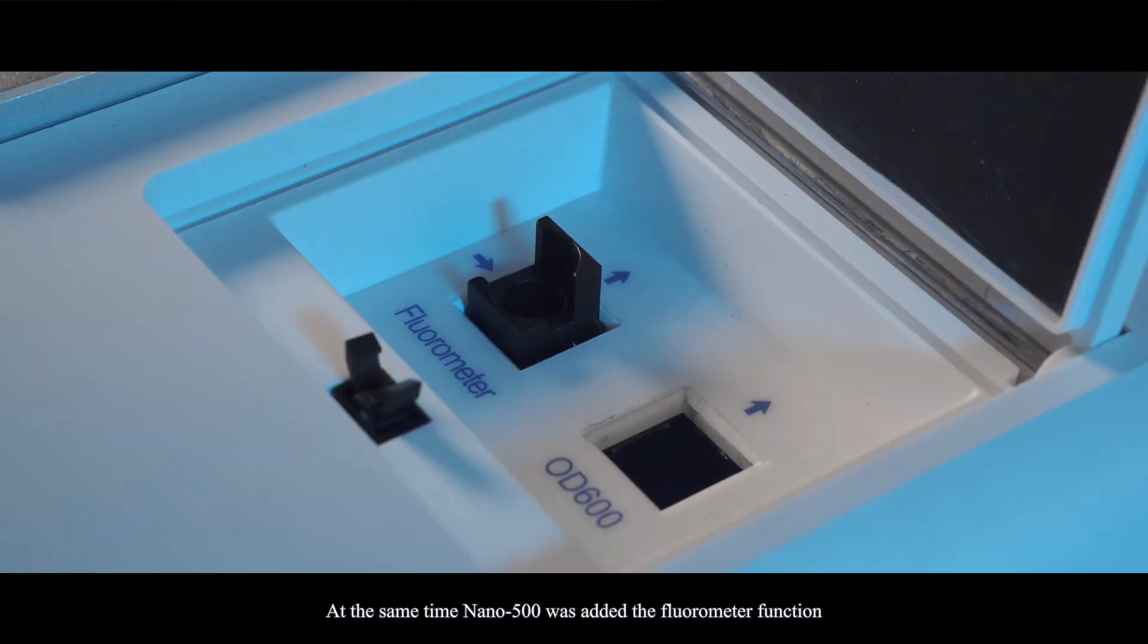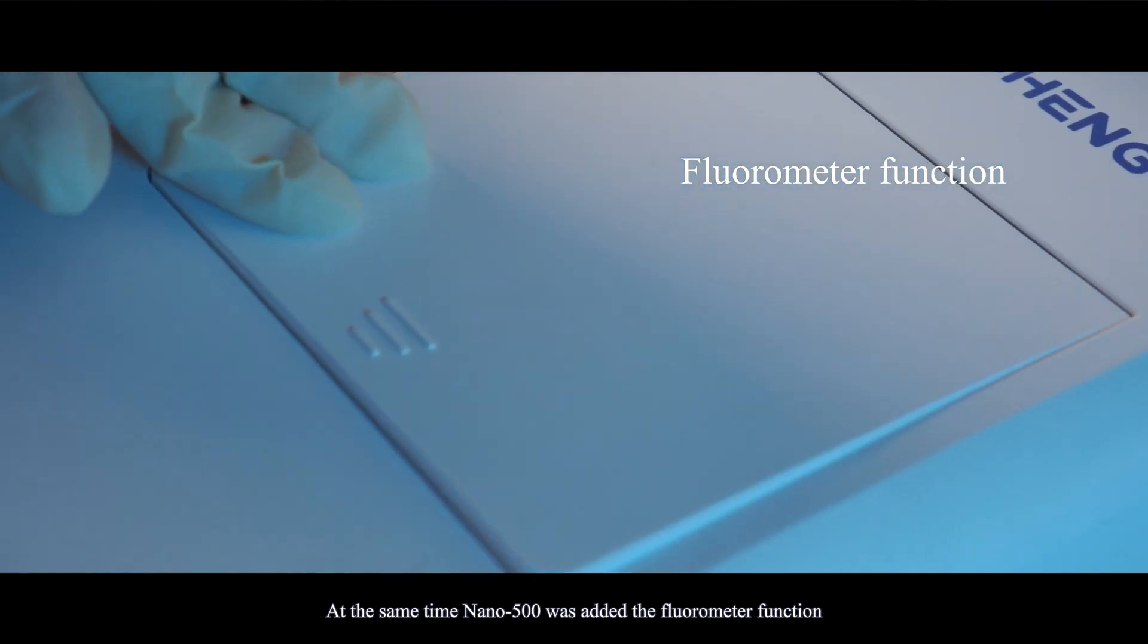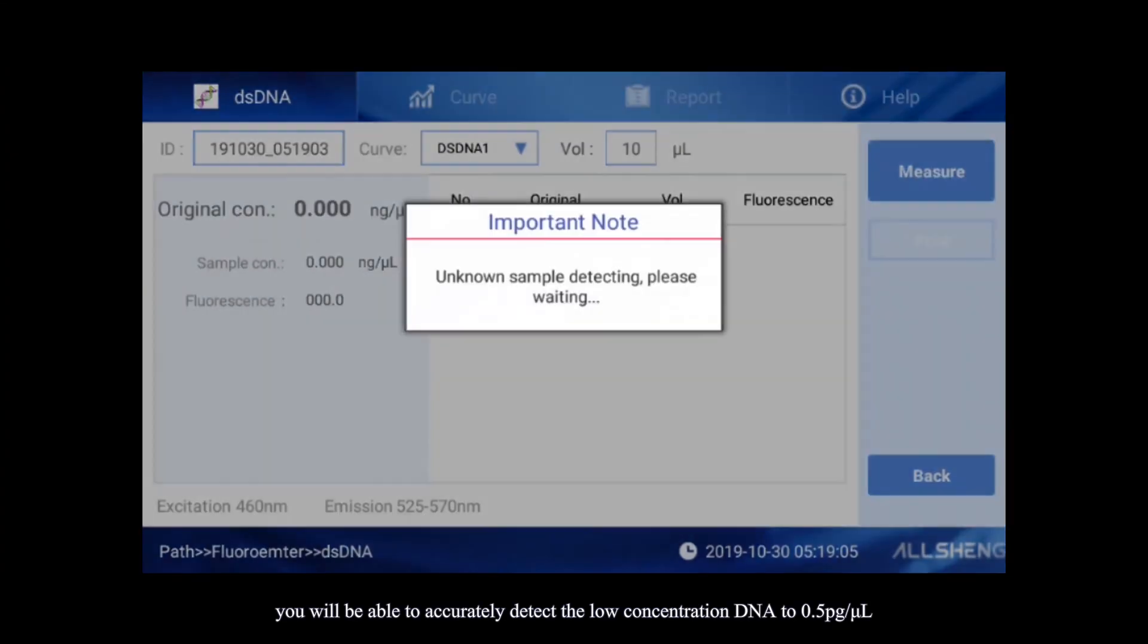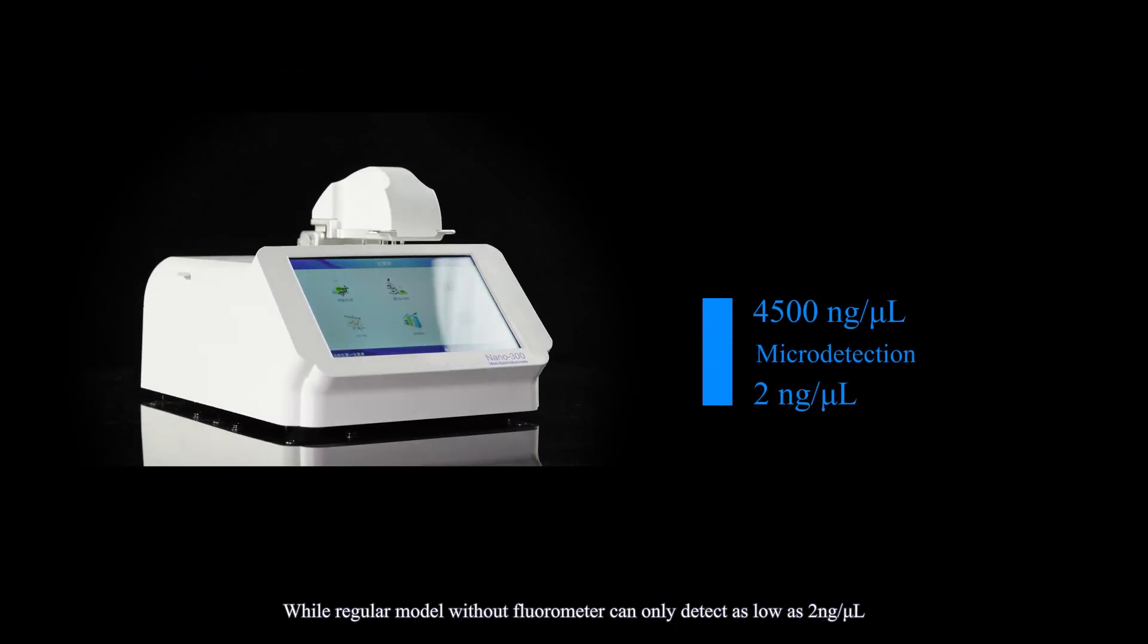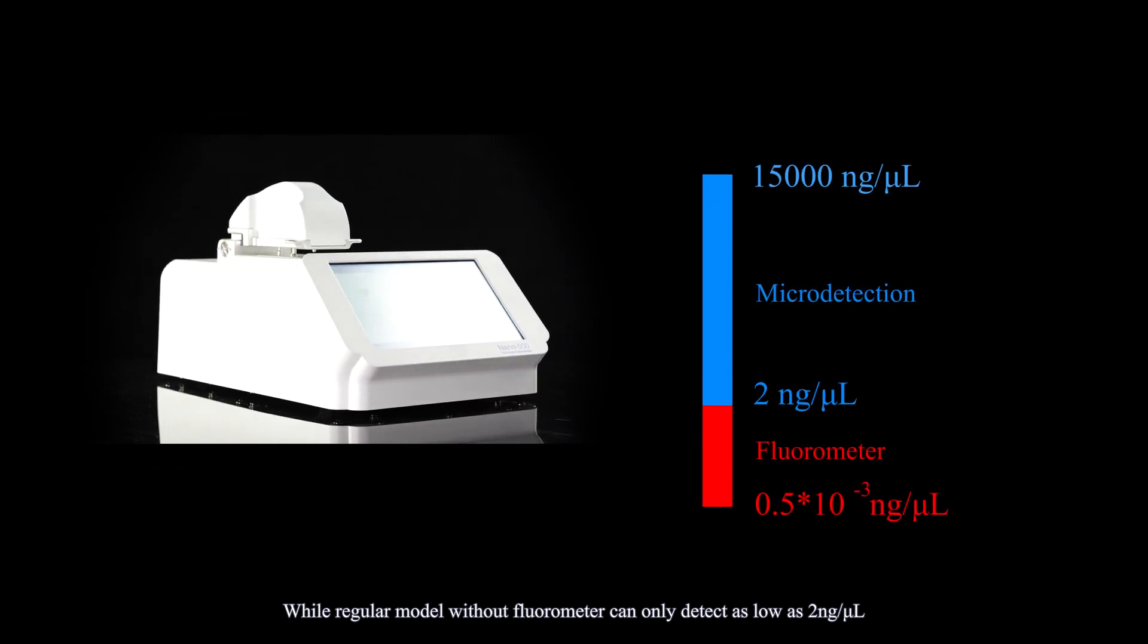At the same time, Nano 500 was added the fluorometer function. With the fluorescence kits, you will be able to accurately detect the low-concentration DNA to 0.5 picograms per microliter, while regular models without fluorometer can only detect as low as 2 nanograms per microliter.